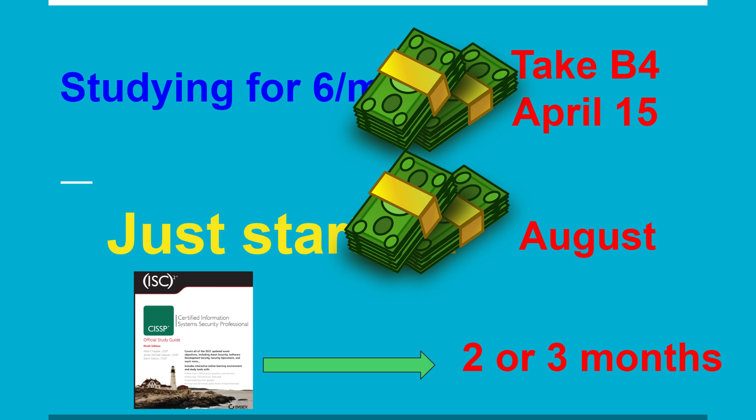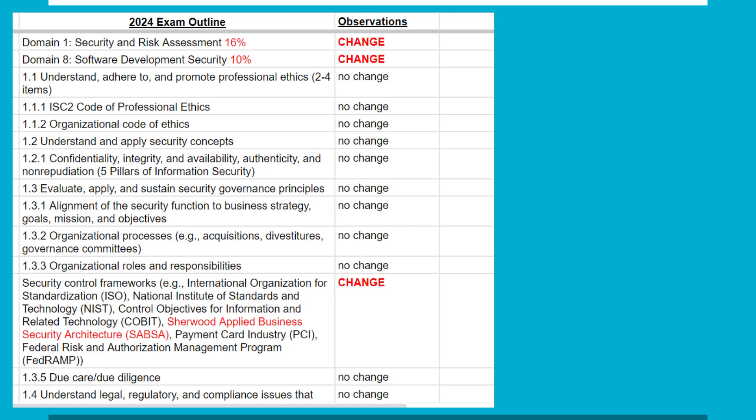We have a list here of all the changes that are coming to the exam. We've compared the new list to the old list, and we'll provide a link in the description to where you can look at this list in detail. To try and teach you any of this right now would be a waste of time, because we know from experience that this doesn't fully represent all the new topics that will be added to the common body of knowledge. In 2021, we found well over 300 new terms that weren't mentioned in the exam outline, some of which had several pages of new material.